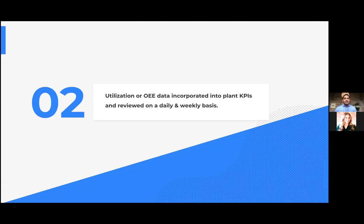The second best practice is making machine utilization or OEE a core plant KPI that is reviewed either daily or weekly. What gets measured gets improved, but it really has to be incorporated into the plant's core KPI set. By reviewing it — whether in a production meeting or an executive meeting — that number will have focus and the team will actively work on improving it. Most companies have quality, cost, and delivery as core KPIs, and adding leading indicators like machine uptime or OEE lets you affect those QCD numbers by making better decisions day to day.